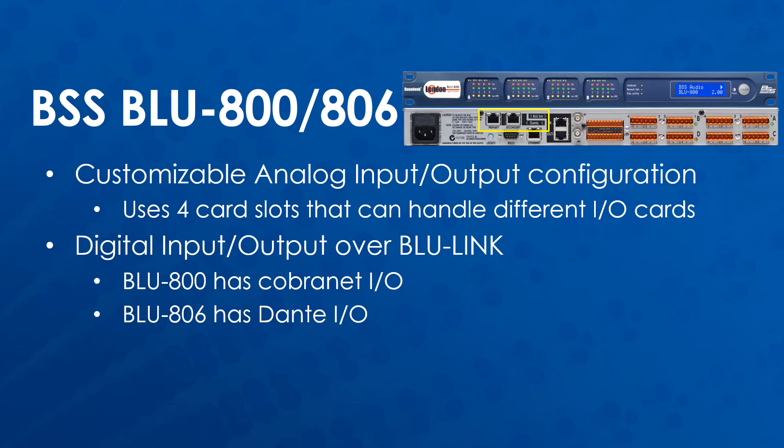The Blue 800 and Blue 806 have a customizable analog input and output configuration using four card slots that can handle different IO cards. They both have digital input and output capabilities using Blue Link. The Blue 800 has CobraNet ports so that it can send and receive audio over CobraNet. The Blue 806 has Dante ports so that it can send and receive audio over Dante. There are other Blue processors available, but these are the ones most commonly found in Daktronics systems.